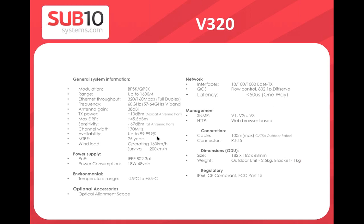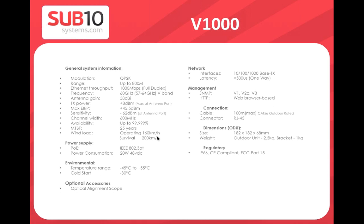The V320 supports two modulations: BPSK and QPSK, with throughput of 320 or 160 megabits respectively. The antenna has slightly better gain — 10 dBi for BPSK versus 8 dBi. Power is lower, requiring only PoE+. Latency is less than 50 microseconds. However, V320 has limited features — no synchronization (SyncE/1588). No new features are planned for V320 as focus is entirely on V100 and the new V1000 platform.